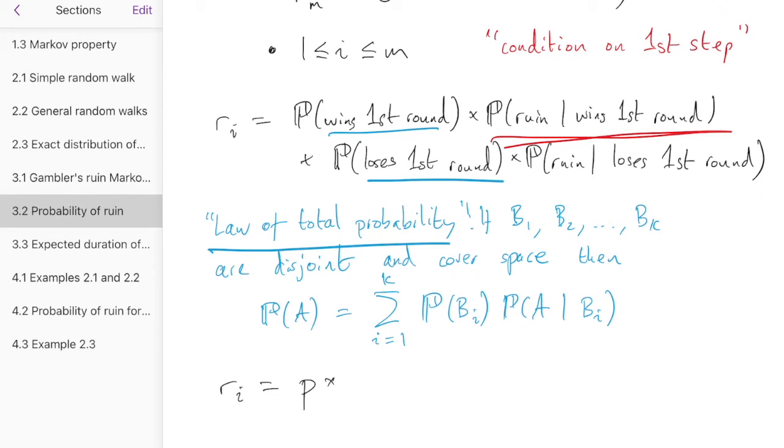But then by the Markov property, she can forget how she got to i plus one pounds and pretend she's just starting over again. And so that has ruin probability R_{i+1}. Because she's won a pound, she's gone up to i plus one, and by the Markov property, we can pretend we're starting over again from i plus one. Similarly, let's look at the other term. The probability she loses the first round is Q. And then the probability of ruin given she loses the first round. But once Alice loses the first round, she goes down to i minus one pounds. But by the Markov property, it's like she's starting over again. So that's R_{i-1}.